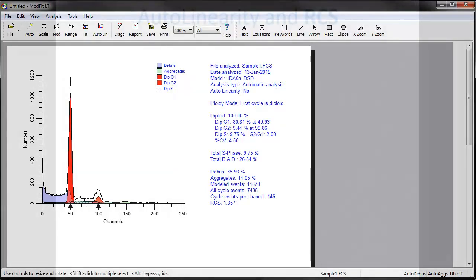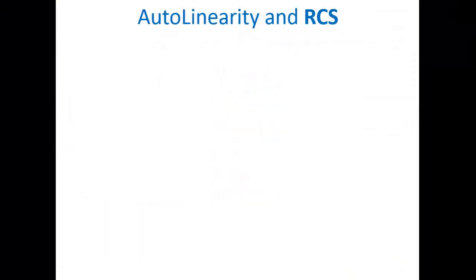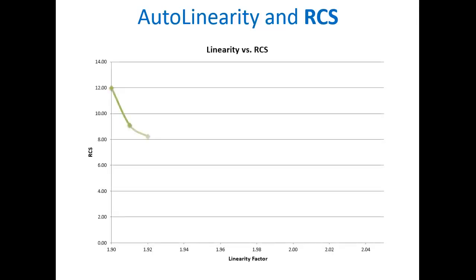How does autolinearity determine the best fit? It does a series of analyses from a low value to a high value and keeps track of the resulting RCS values. The lowest RCS value represents the best fit of the data. It then does the final analysis with the best linearity value.